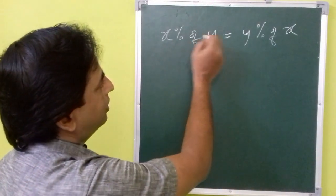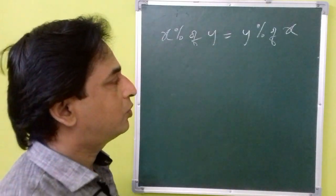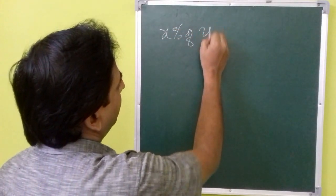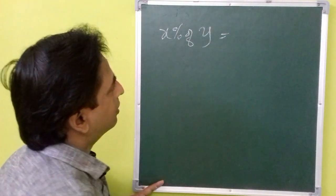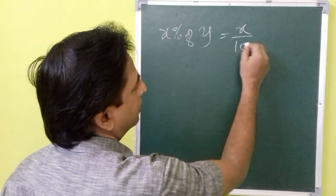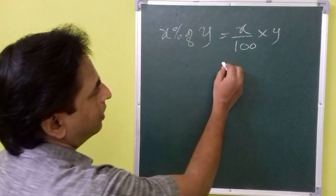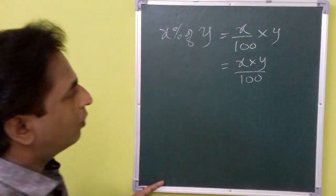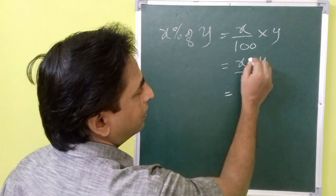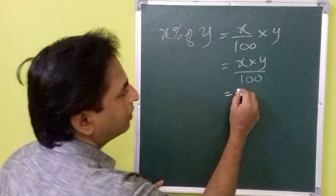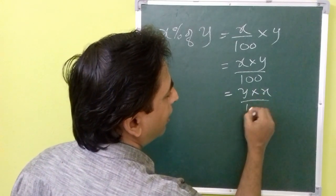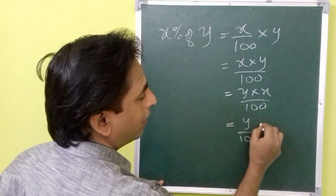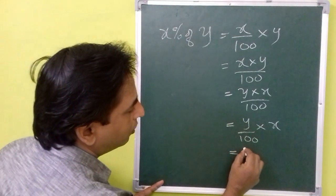Now we will see why this is true for every x and y — whatever numbers you put instead of x and y, this equation is true. x percent of y can be written as x times y divided by 100. Since multiplication is commutative, we can write y multiplied by x divided by 100, or split it as y divided by 100, multiplied by x, which is equal to y percent of x.